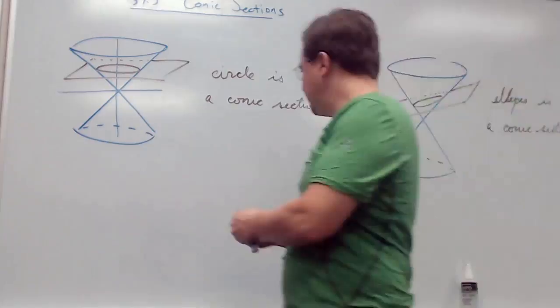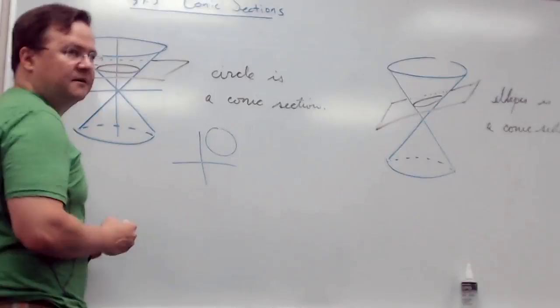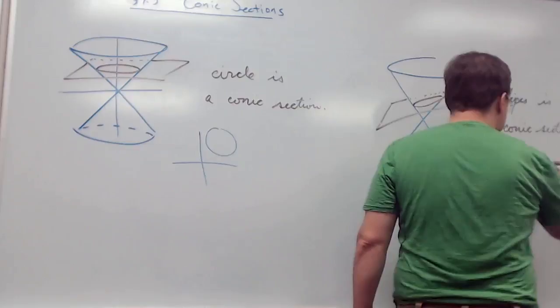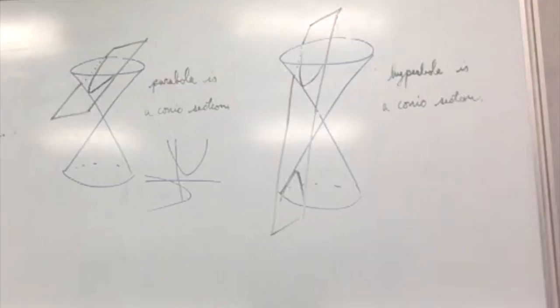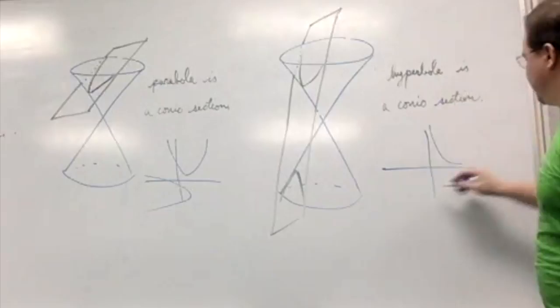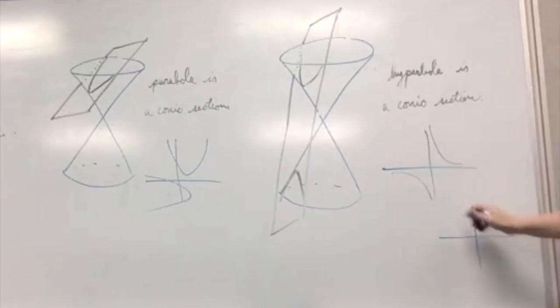We have seen graphs of circles before. We haven't done a whole lot with ellipses, but we saw them with parametric equations. We have worked a lot with parabolas, especially in pre-calculus — ones that open up or down, or even sideways. And hyperbolas — we spent a lot of time with y equals one over x, which is actually a hyperbola rotated by 45 degrees. We also want to consider ones that look like this.